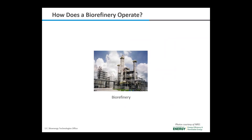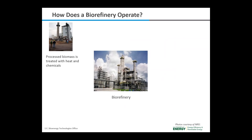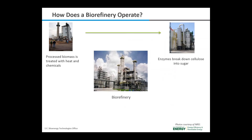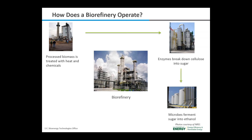A biorefinery is where solid feedstock is converted into a finished product or fuel. First, the biomass brought to the biorefinery is treated with heat and chemicals, which help dry the biomass and prepare it for further breakdown. Next, the treated biomass moves to a tank where enzymes are added to break down the cellulose into simple sugars. Those simple sugars are then fermented in a tank by microbes, creating ethanol.